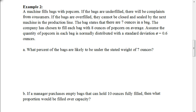A machine fills bags with popcorn. If the bags are underfilled, there will be complaints from customers. If the bags are overfilled, they cannot be closed and sealed by the next machine in the production line. The bag states that there are 7 ounces in a bag, and the company has chosen to fill each bag with 8 ounces of popcorn on average. The quantity of popcorn in each bag is normally distributed with a standard deviation of 0.6 ounces. What percent of bags are likely to be under the stated weight of 7 ounces?